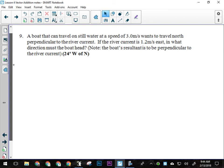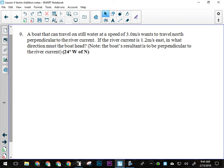So in this question here, in number nine, we have a boat that can travel on still water at three meters per second. So that's basically the maximum speed of the boat. As long as it's not going into the current or with the current, it can move at three meters per second.